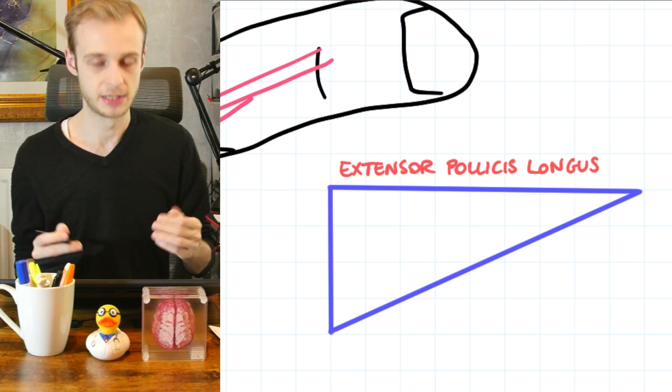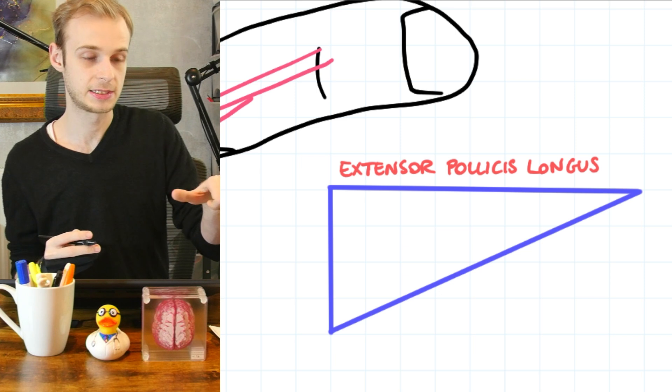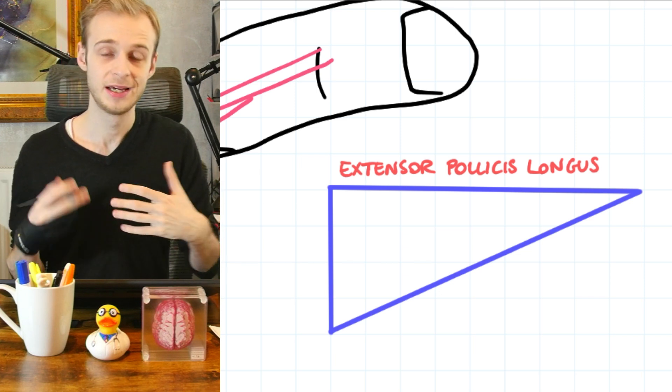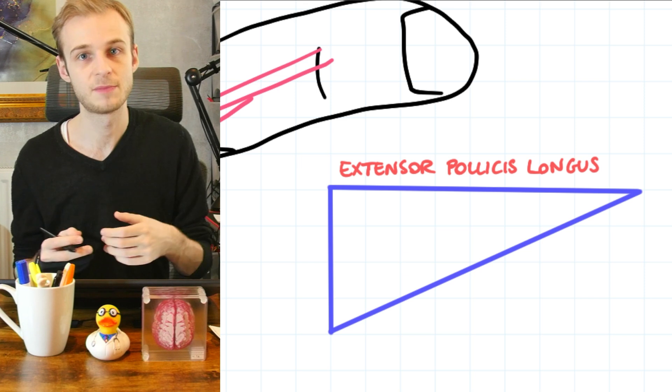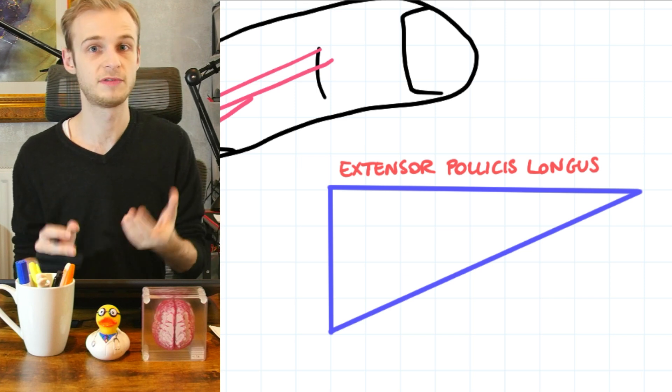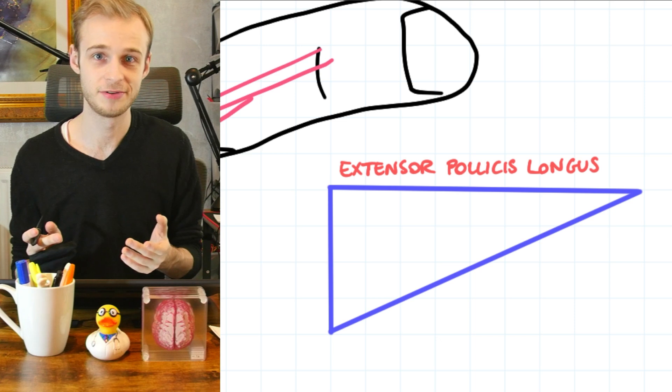And again, the name tells us what it does. Extensor, it's an extensor muscle. When it contracts, it extends something. Pollicis comes from the Latin name of the thumb pollex. If you've not watched my video yet on the bones of the hand and wrist, make sure you go and do that.